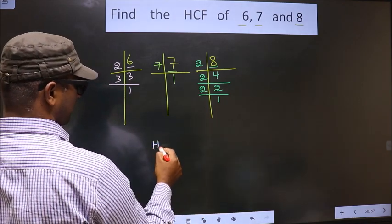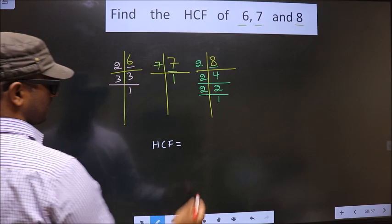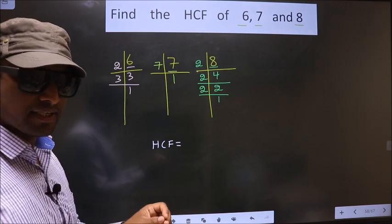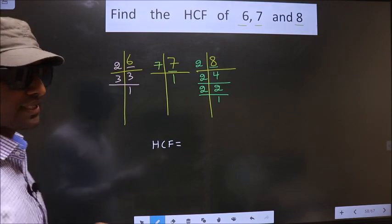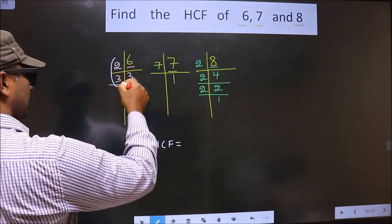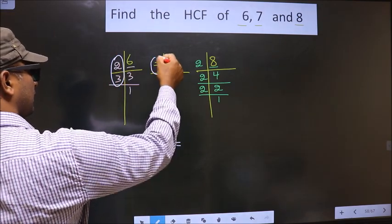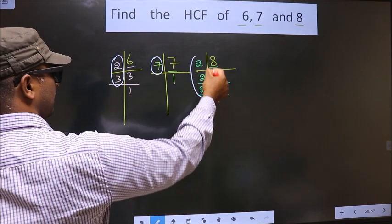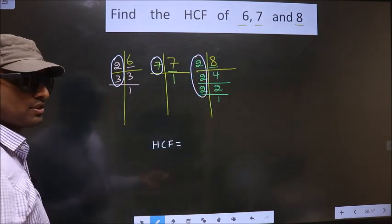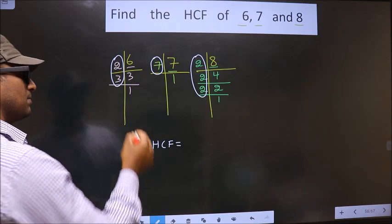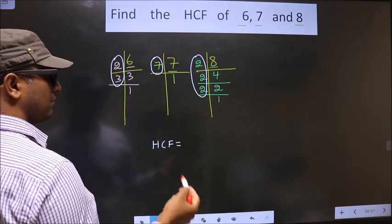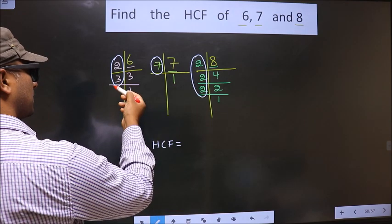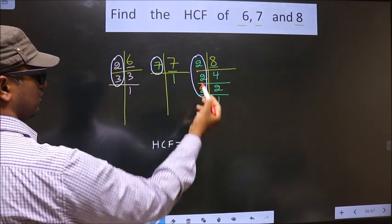So now our HCF is, HCF is the product of numbers that are present here and here and also here. So now we should find the numbers that are present in these 3 places. I repeat, we should find the numbers that are present here and here and also here.